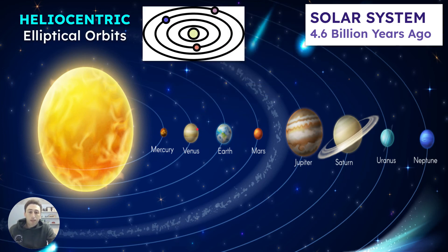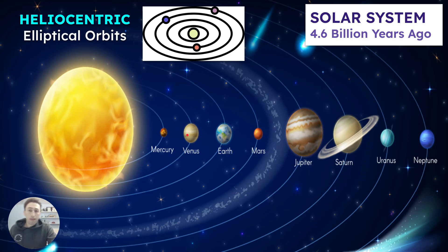These are called the planets. Planets are the celestial bodies that orbit around the star, so we are on a planet called Earth. In our solar system we have eight planets. This is called the heliocentric model — helio refers to the sun, meaning the sun is at the center, so it's called heliocentric.